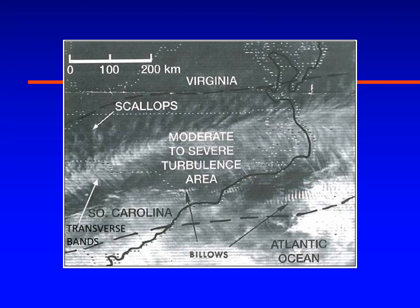Another thing you can see at high altitudes is something like a lenticular cloud, but they're called transverse bands. Transverse bands are caused by the jet stream — a wave sets up in the jet stream, and when you get waves at high altitudes it produces clear air turbulence. You can see these in South Carolina and moving off the east coast into the Atlantic Ocean — little wave clouds that are producing turbulence.